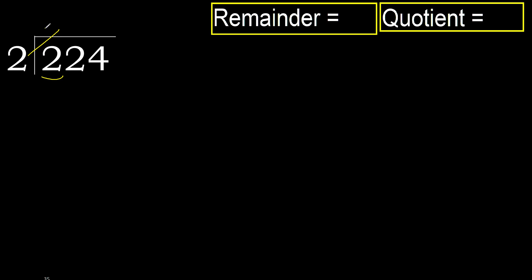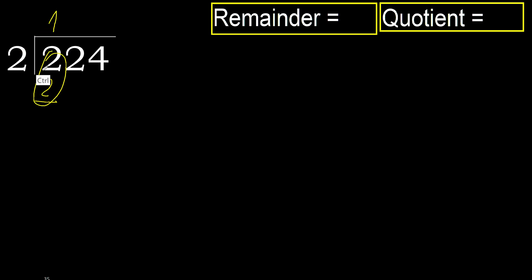2 multiplied by 2 is 4 — 4 is greater, so multiply by 1. 2 multiplied by 1 is 2, it is not greater. Subtract, then next.